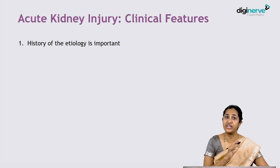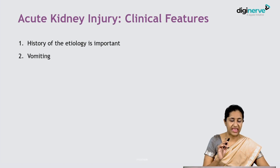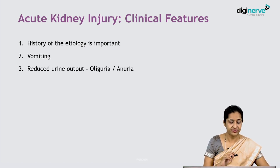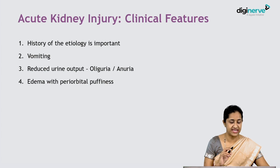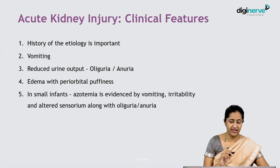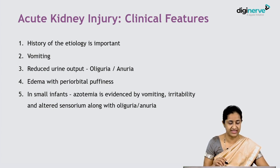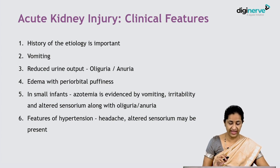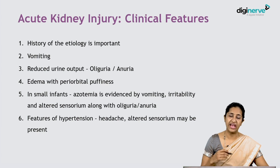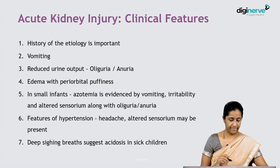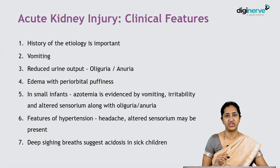The clinical features of acute kidney injury, regardless of cause, include vomiting due to azotemia, reduced urine output producing oliguria or anuria, and fluid retention evidenced by edema and periorbital puffiness. In smaller infants, azotemia is evidenced by vomiting, irritability, and altered sensorium along with oliguria or anuria. Features of hypertension can also be present — causing headache and altered sensorium — and once the child has gone into acidosis, deep sighing breaths can occur in very sick children.